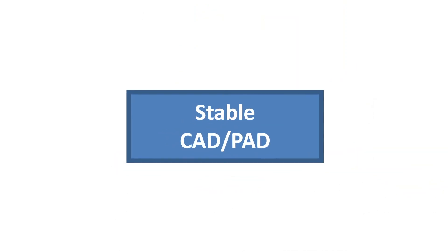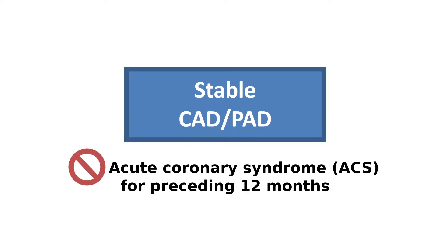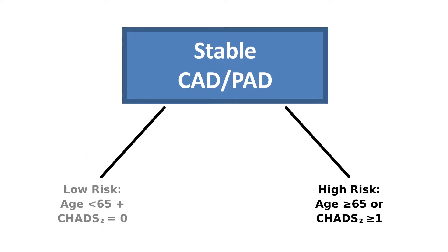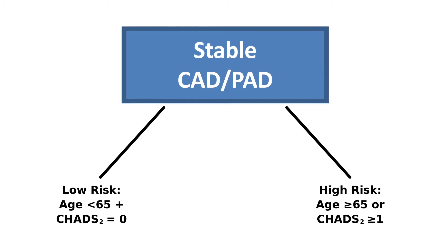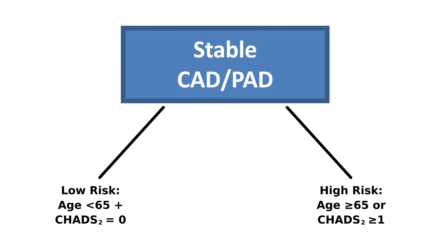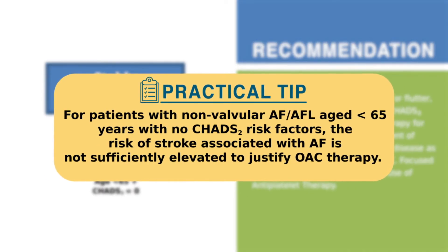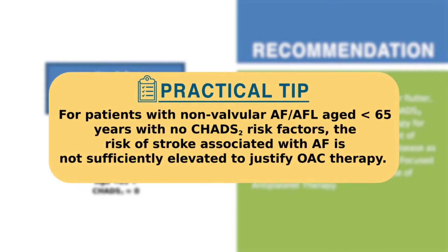For patients with stable CAD or PAD with concomitant nonvalvular atrial fibrillation or flutter — stable CAD defined by the absence of acute coronary syndrome for the preceding 12 months — the first step is to determine whether there is a low or high risk of stroke based on risk factors such as age and CHADS2 score. For patients with nonvalvular AF or flutter aged less than 65 years with no CHADS2 risk factors, the CCS suggests no antithrombotic therapy for stroke prevention, with management of their coronary or arterial vascular disease. The risk of stroke associated with AF is not sufficiently elevated to justify OAC therapy in these patients.